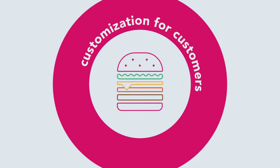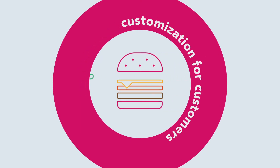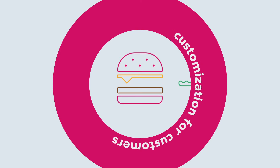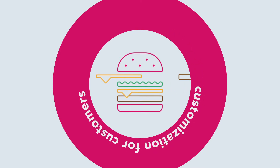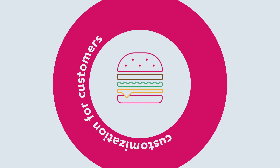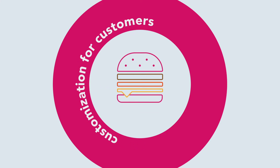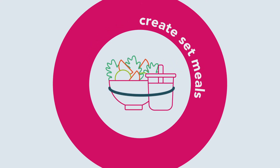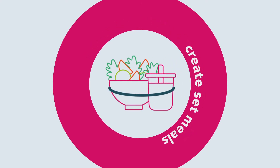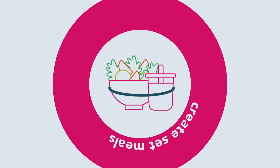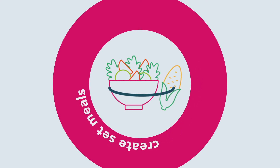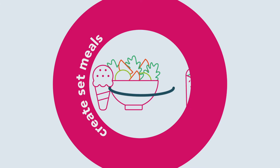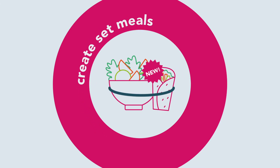Why use choice groups and choices? Firstly, choice groups and choices give customers freedom to customize a dish. For example, allowing them to replace a meat patty with a vegetarian patty, or giving them the choice to have a better cut of meat at an additional cost. Secondly, you can create combo set meals — for instance, creating a combo set meal using a main dish and items from other categories like drinks, sides or desserts, or tying up a popular product with a new product.